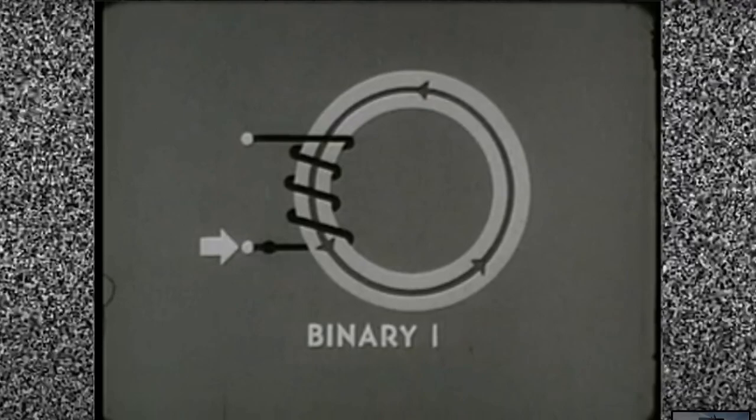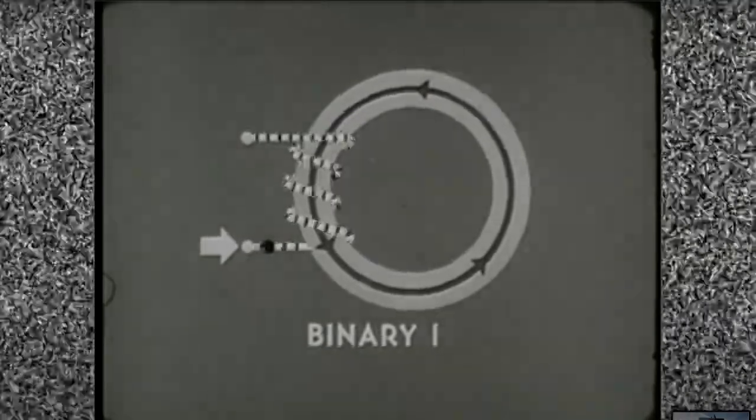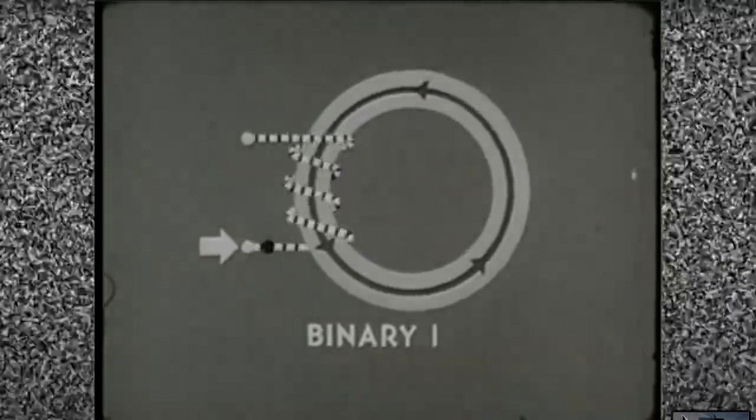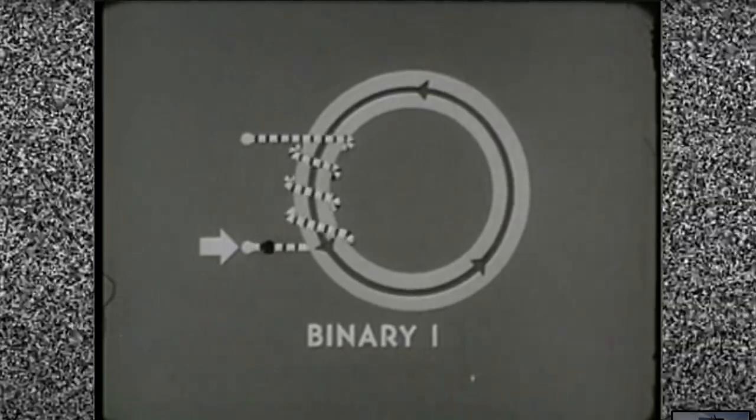But if we send current through the other way, into the dot side of the winding, then, of course, the core's state will change.